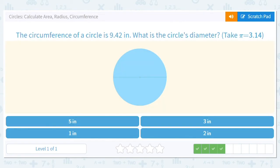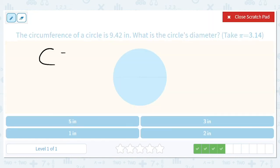Okay, the circumference of a circle is 9.42 inches. What is the circle's diameter? So circumference, πd or 2πr.